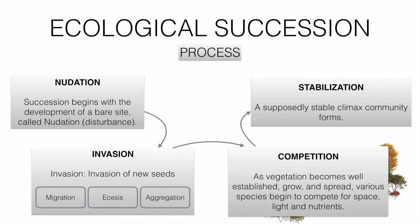Once the seeds are established and aggregated, they start growing and competition begins among the different plants for growth, spread, light, and nutrients. Various species compete, and whoever is stronger will reach stabilization. This stable state is known as the climax community. The overall process involves nudation, invasion, competition, and stabilization.